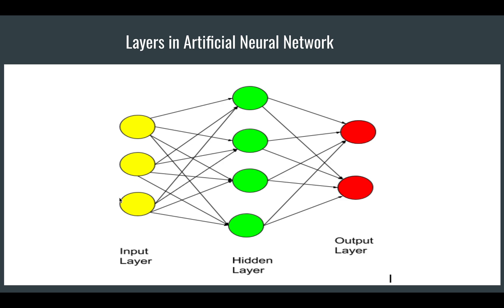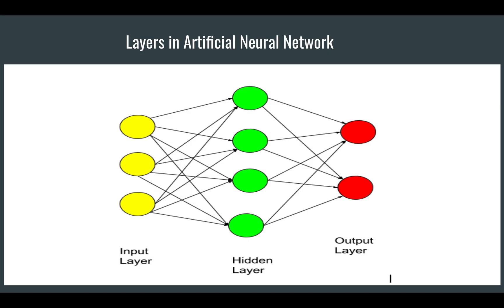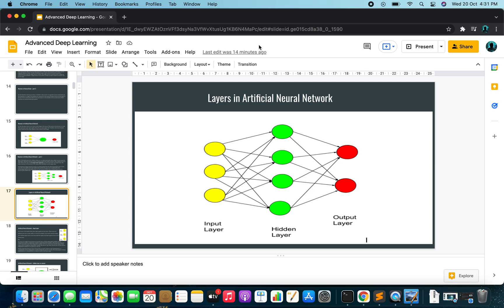The main focus of today's video was to understand what the input layer, hidden layer, and output layer are. In the next video, we will look at how computation happens in the hidden layer — how we multiply, add bias, and use activation functions. I hope you understand input layer, output layer, and hidden layer. That's all for this video — thank you!